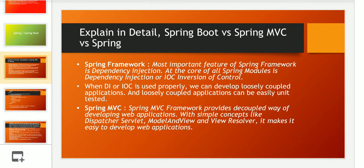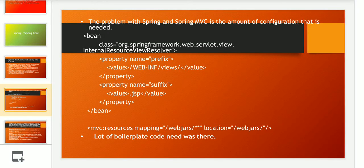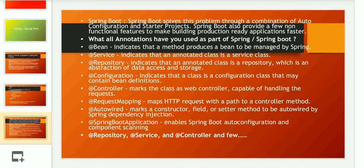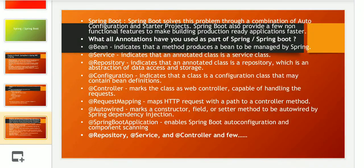When it comes to Spring MVC, the Spring MVC framework provides a decoupled way of developing web applications with concepts like DispatcherServlet, Model, View, and ViewResolver. However, the problem with both Spring and Spring MVC is the amount of configuration needed — lots of boilerplate XML code was required. Spring Boot solves this problem through a combination of auto-configuration and starter projects. Spring Boot also provides non-functional features to make building production-ready applications faster.